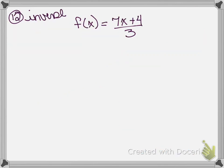Our next one, we need to find the inverse of this function. An inverse does exist because this is linear. There are several steps we follow for inverse. First, we take f of x and switch it out to make it a y. So we have y equals 7x plus 4 — that's step one: replace f of x with y.